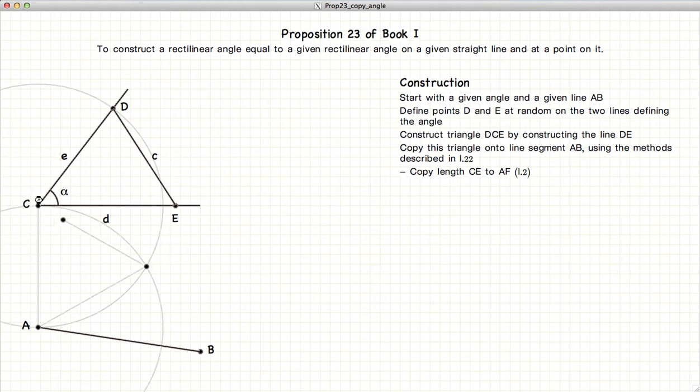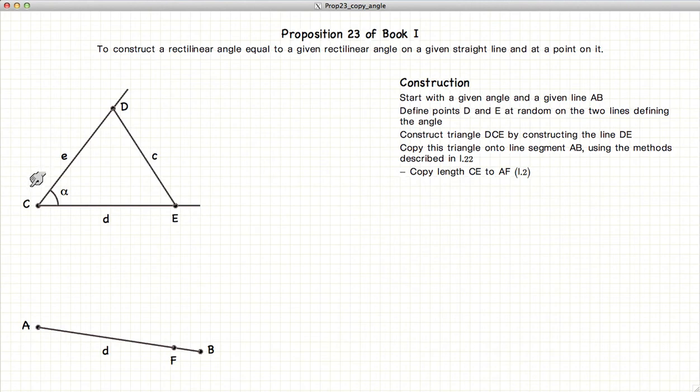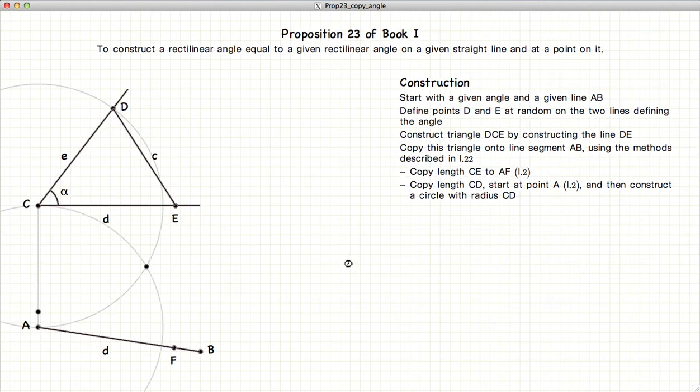First thing we're going to do is to copy the line or the length D onto AB. Next we will copy the line CD onto the point A. Copy the length DE onto the point F.